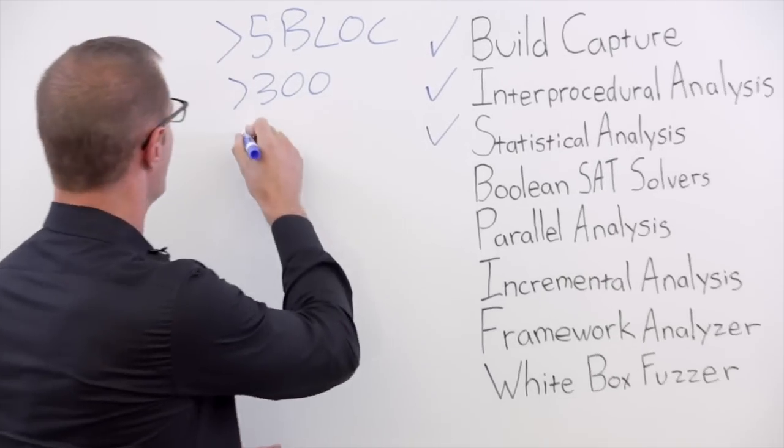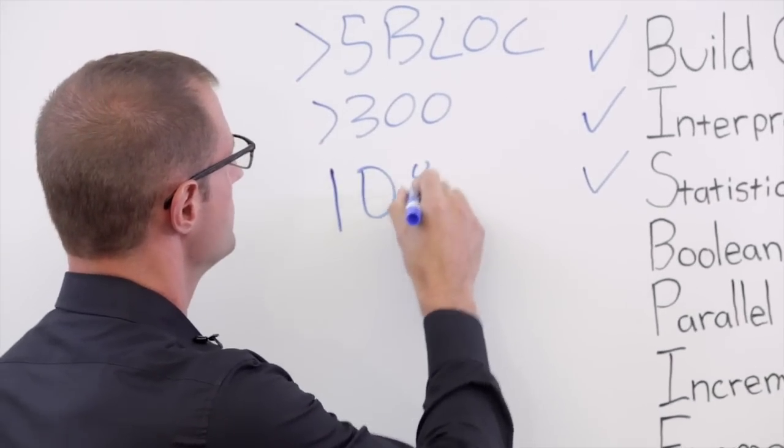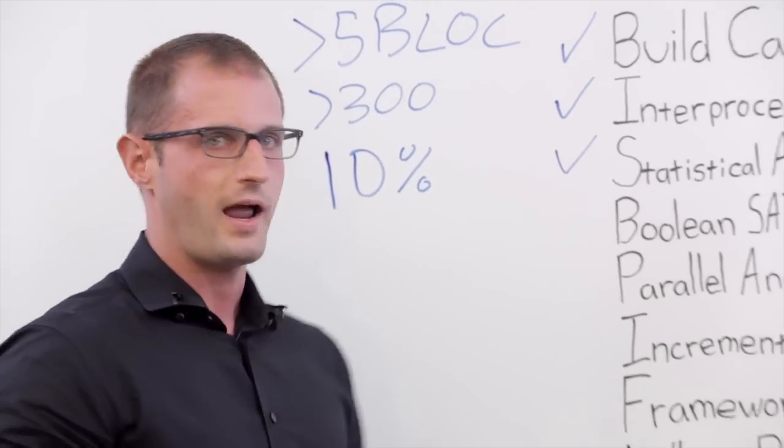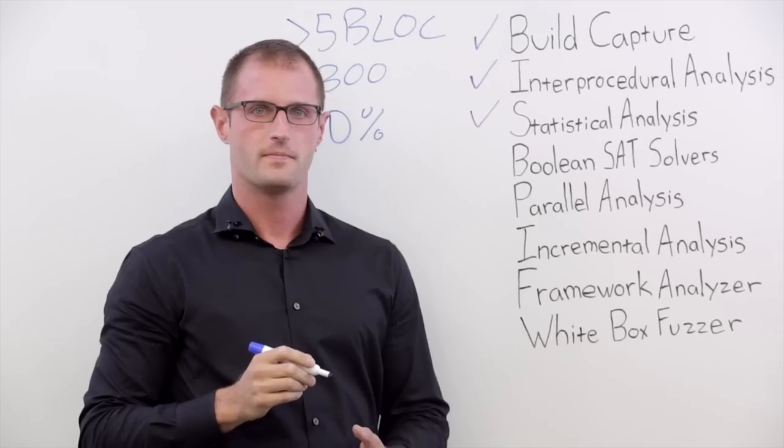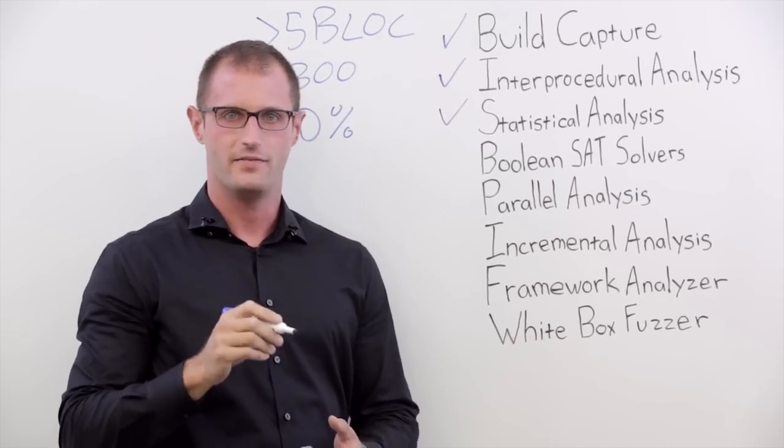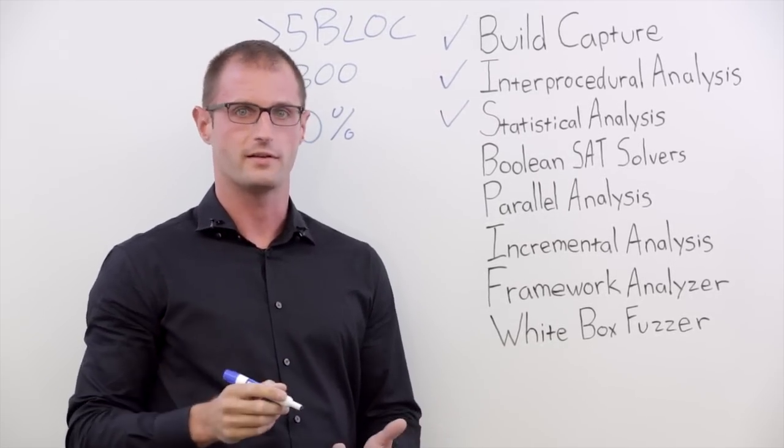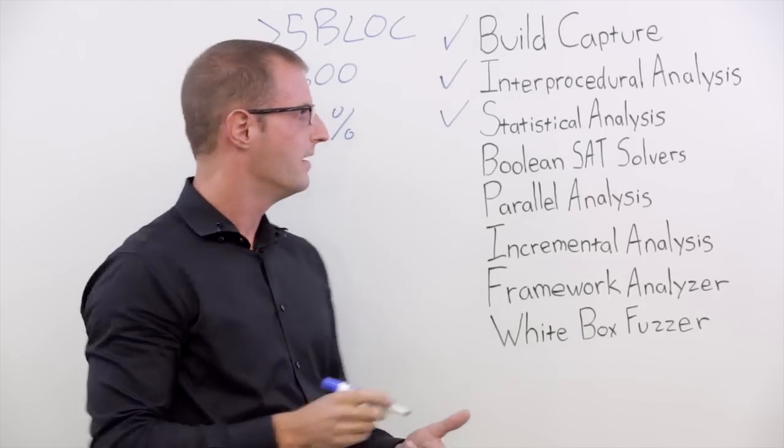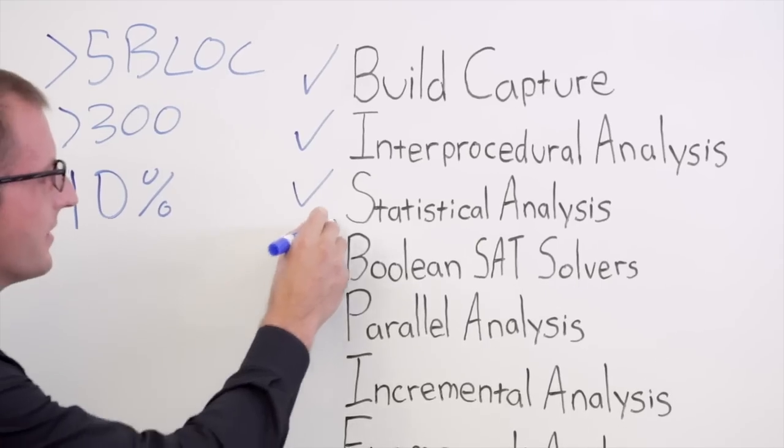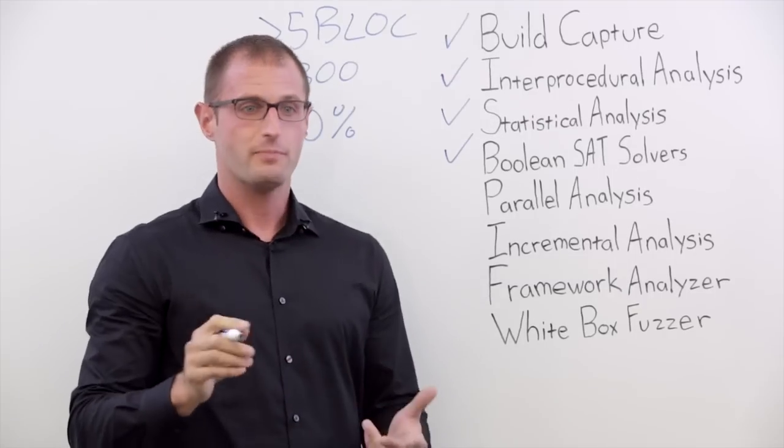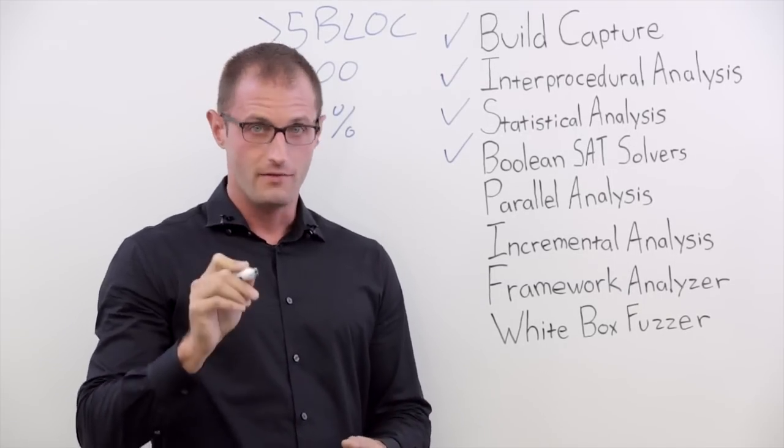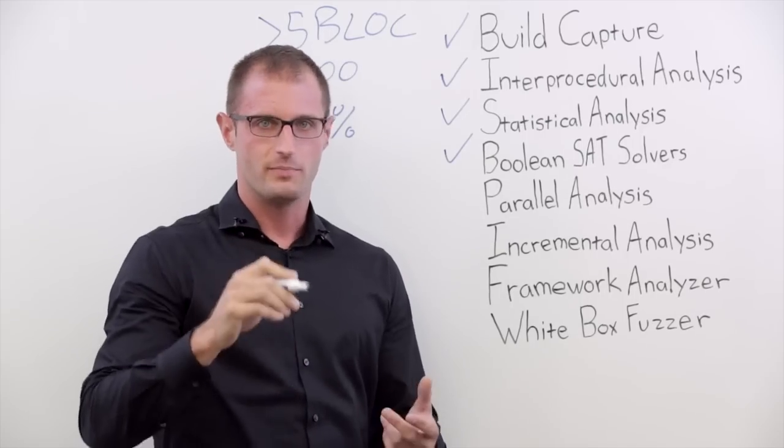Here's another number for you: 10%. This is our average false positive rate. That means 9 out of 10 defects that we report is a real issue and warrants a fix. Our patent pending Boolean satisfiability engine performs a bit-accurate analysis of your code and helps us keep the false positive rate nice and low.